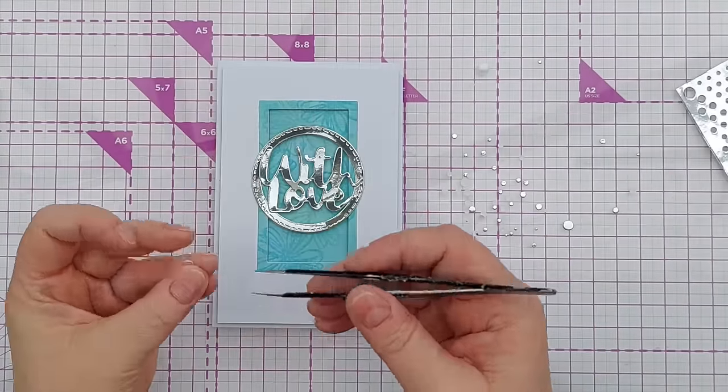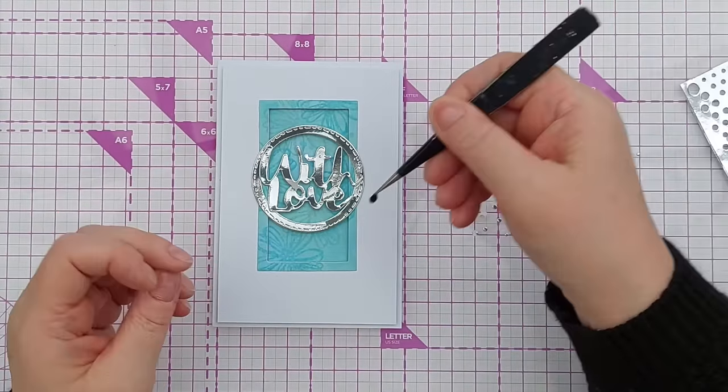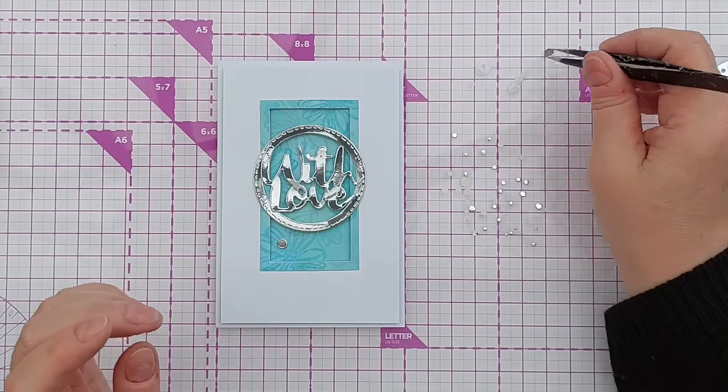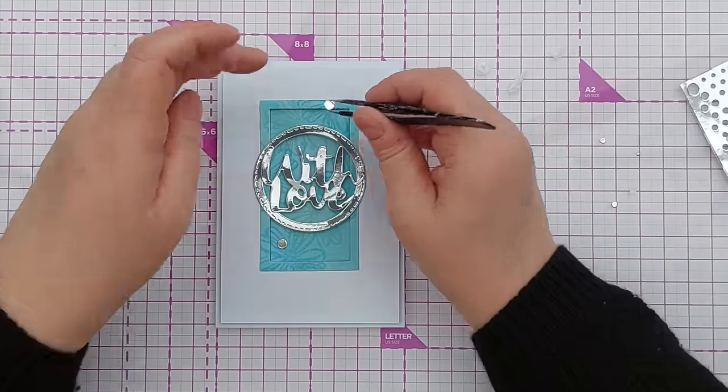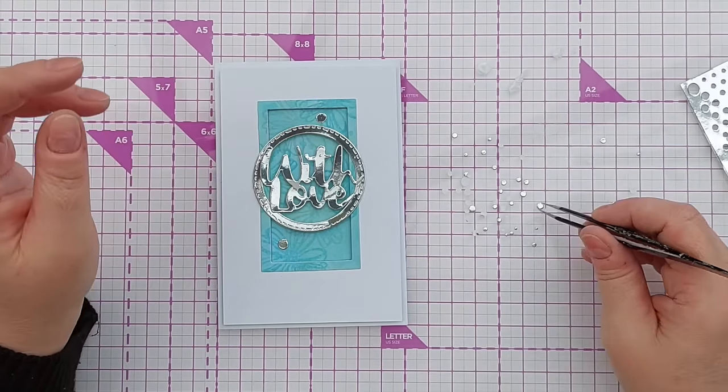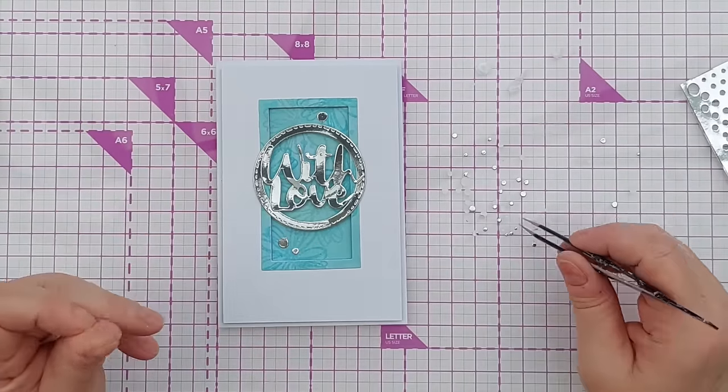I'm going to stick these down by simply dipping each little circle in a little bit of tacky glue or high tack glue. I'll start with my big dots and add them where I want them, and then work my way down the sizes until I'm happy with the number of dots that I've got.